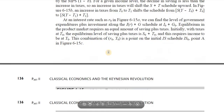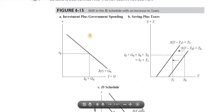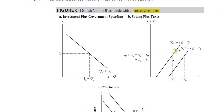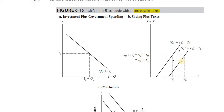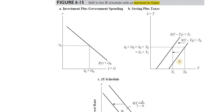The second factor that can cause a shift in the IS curve is changes in taxes. When we talk about taxes, we don't need to change anything in the investment curve — we focus on the saving-plus-taxes component. Initially we are at I0 plus G0 equal to S0 plus T0, with equilibrium income at Y0, and the IS schedule corresponds to taxes at T0.